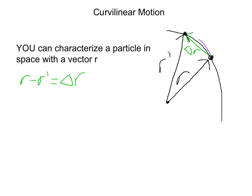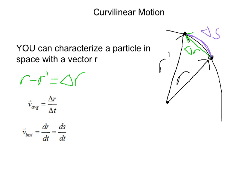We also have the arc distance, which is the change in s. To define velocity: average velocity equals the change in r over the change in time. The instantaneous velocity equals the instantaneous change in r with respect to time, and also the instantaneous change in s with respect to time, because as you get smaller and smaller changes they become equal. On the graph, the instantaneous velocity is perpendicular to the motion.